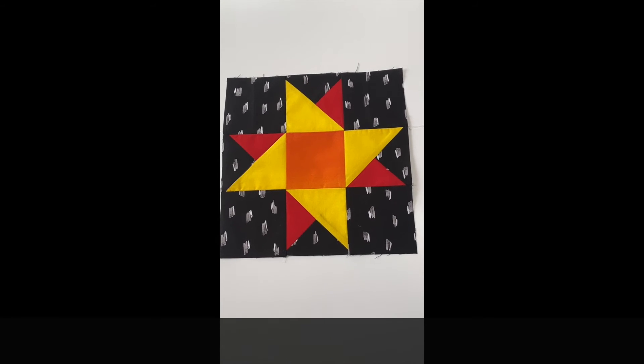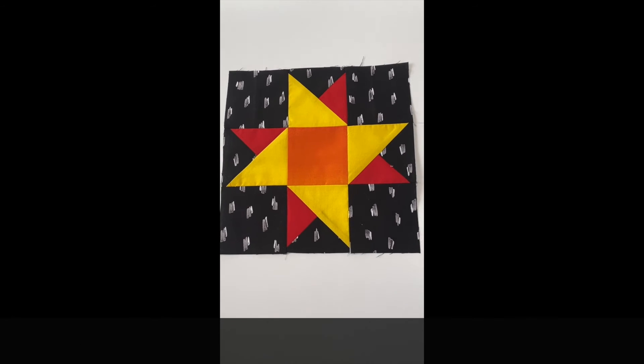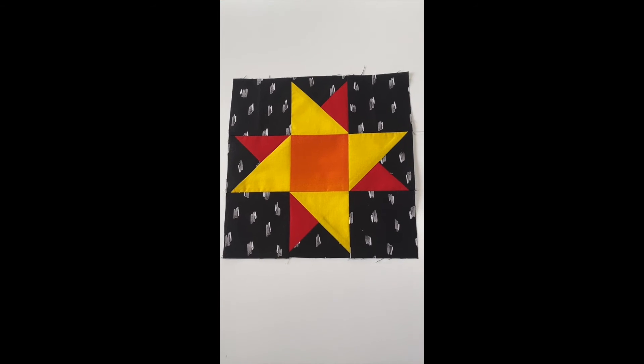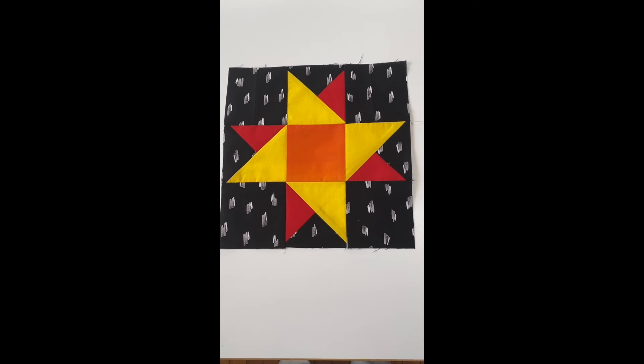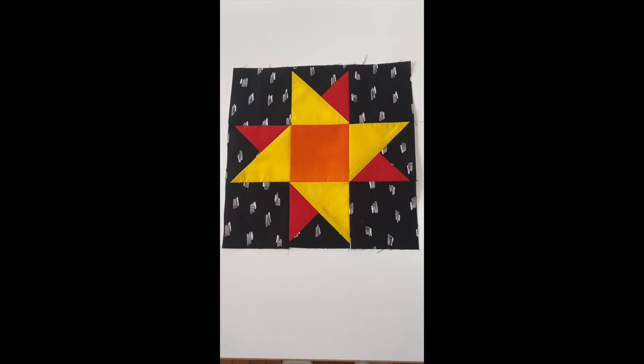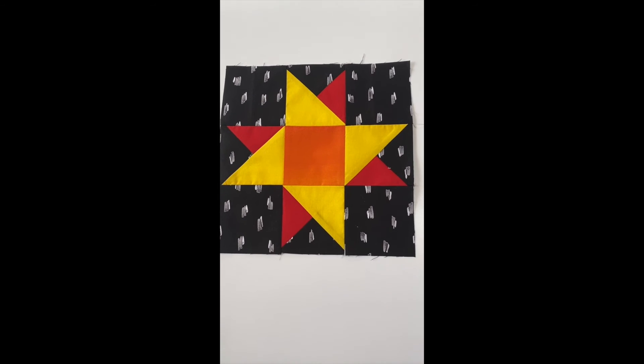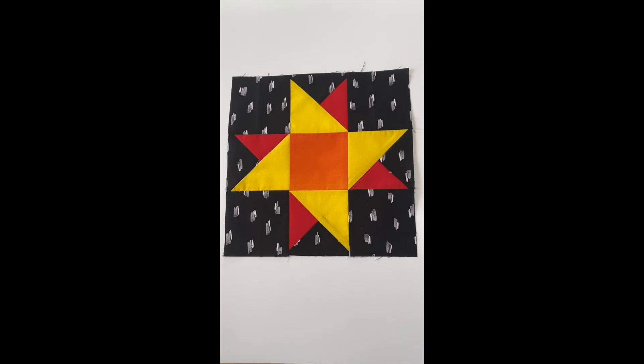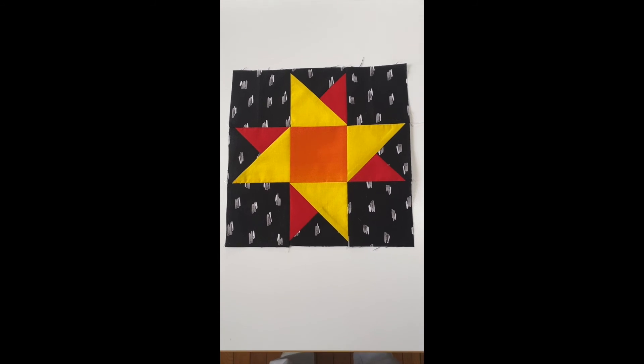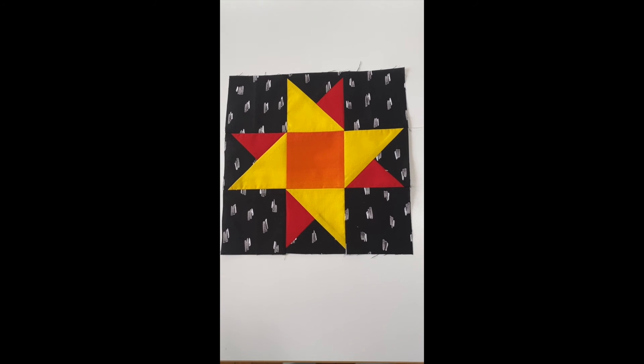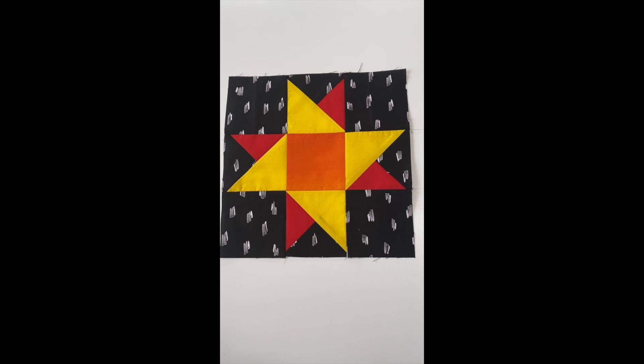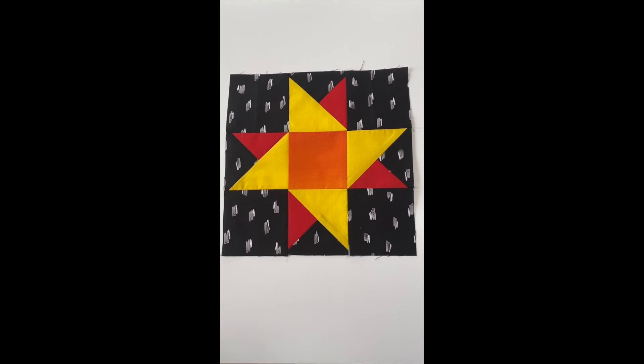All right. My red and yellow twin star block is all finished. And I like it. I think I might also like this if I substituted a red and yellow stripe fabric right in the center, or maybe a dot fabric with those two color choices in it. There's lots and lots of possibilities with this twin star block. Try them out.